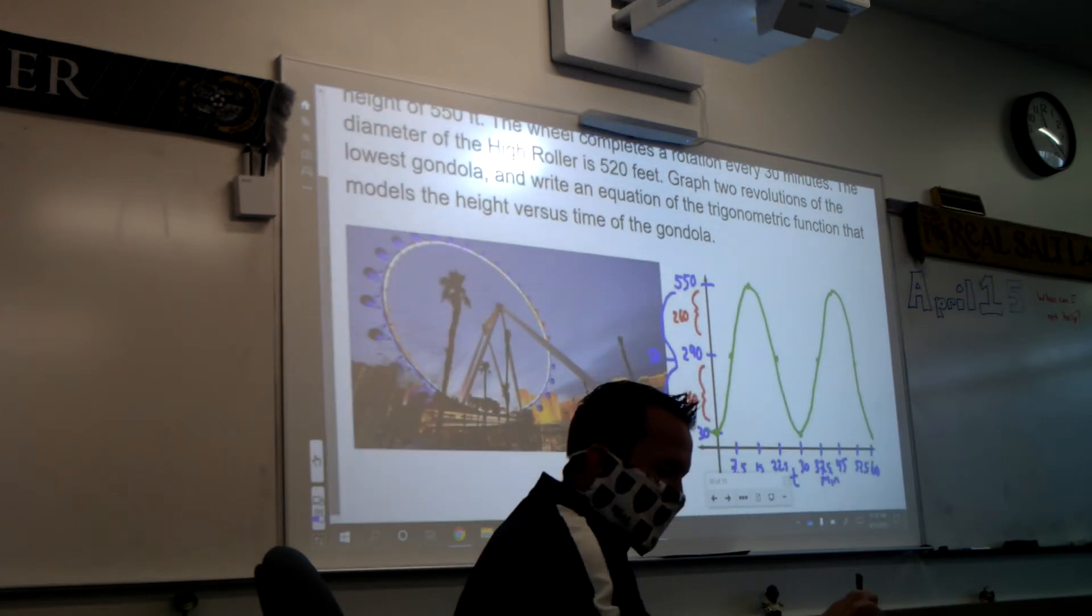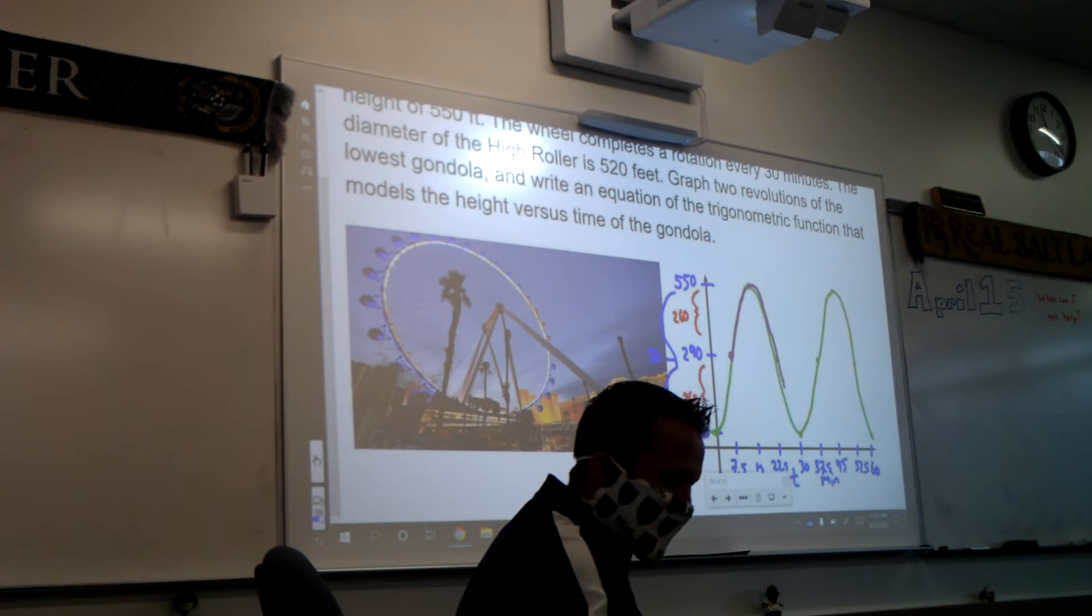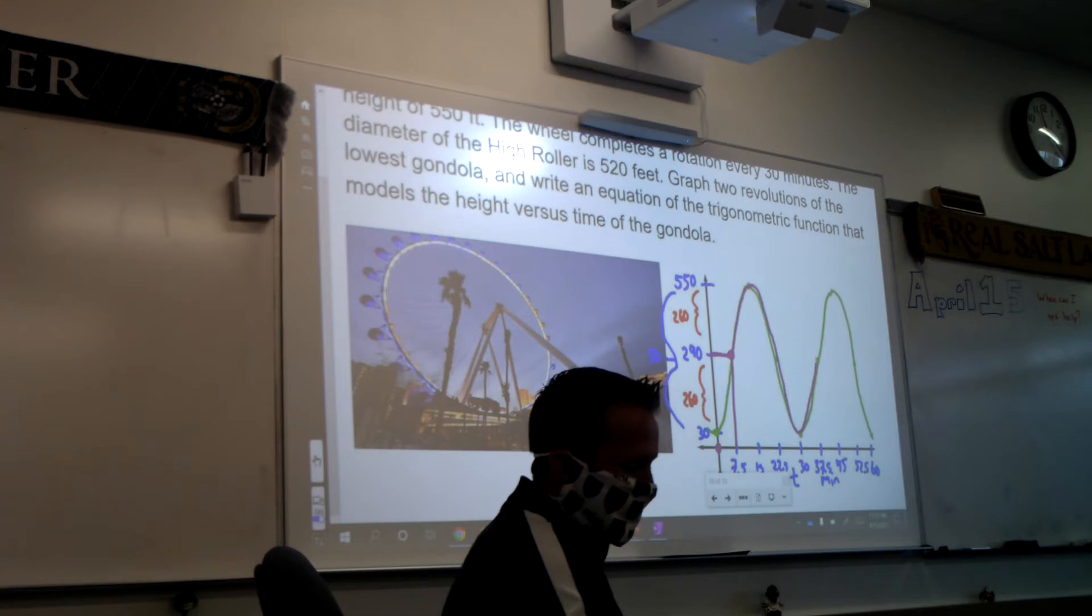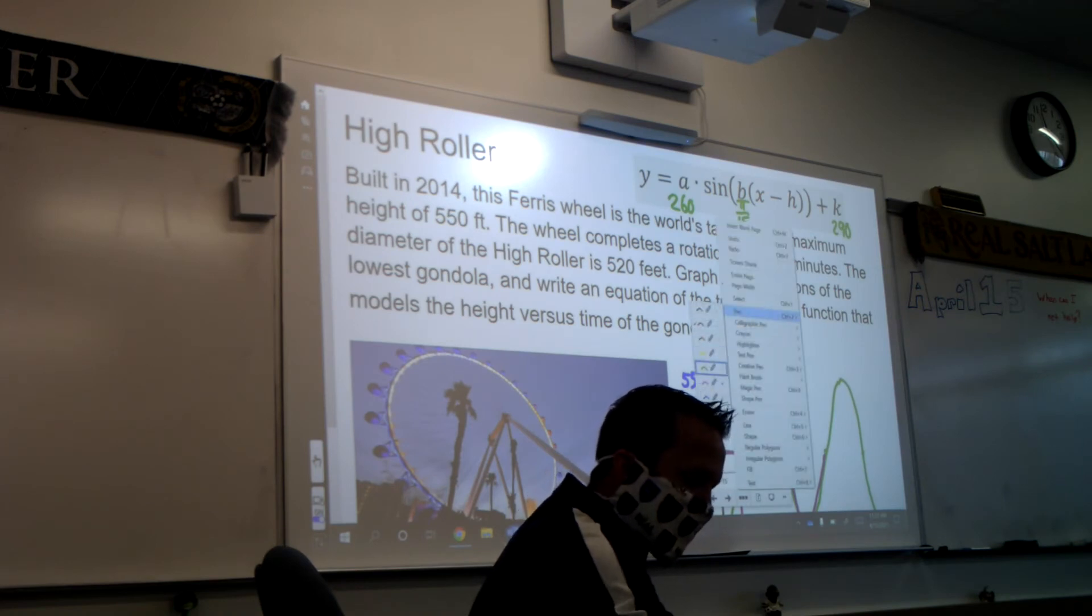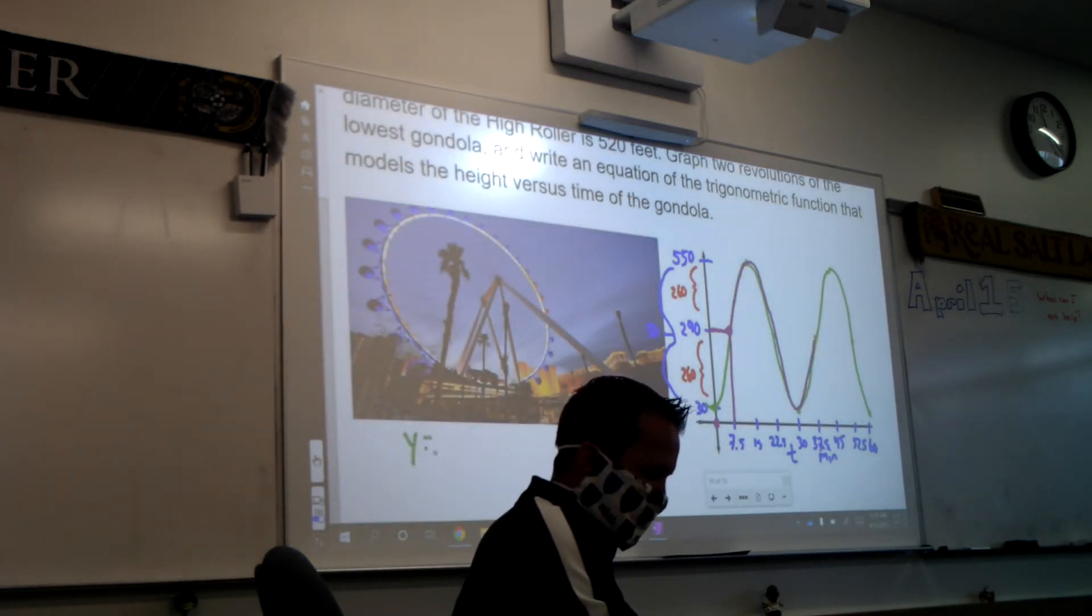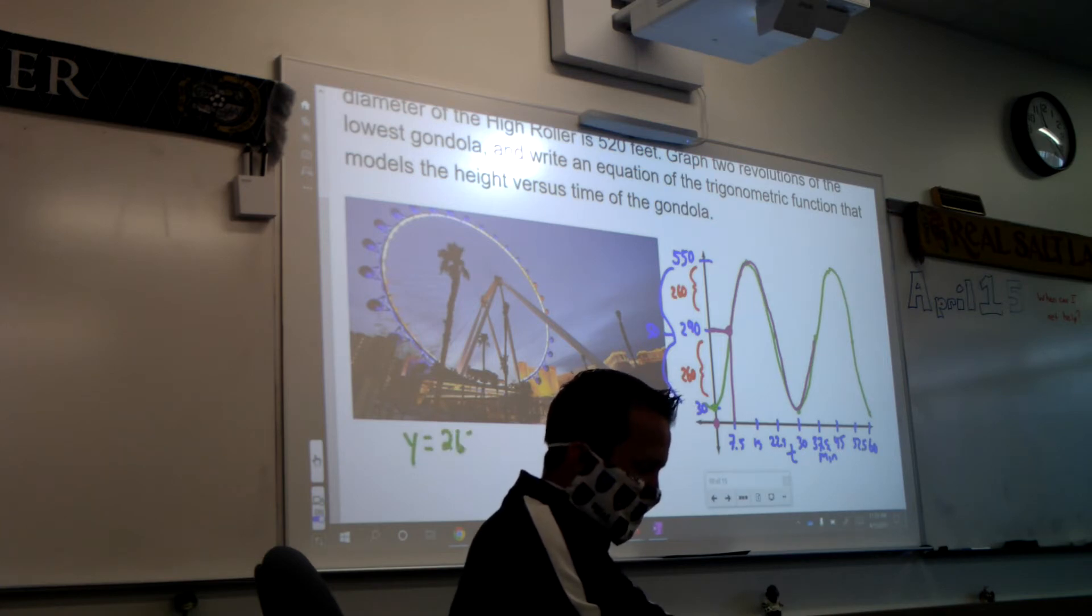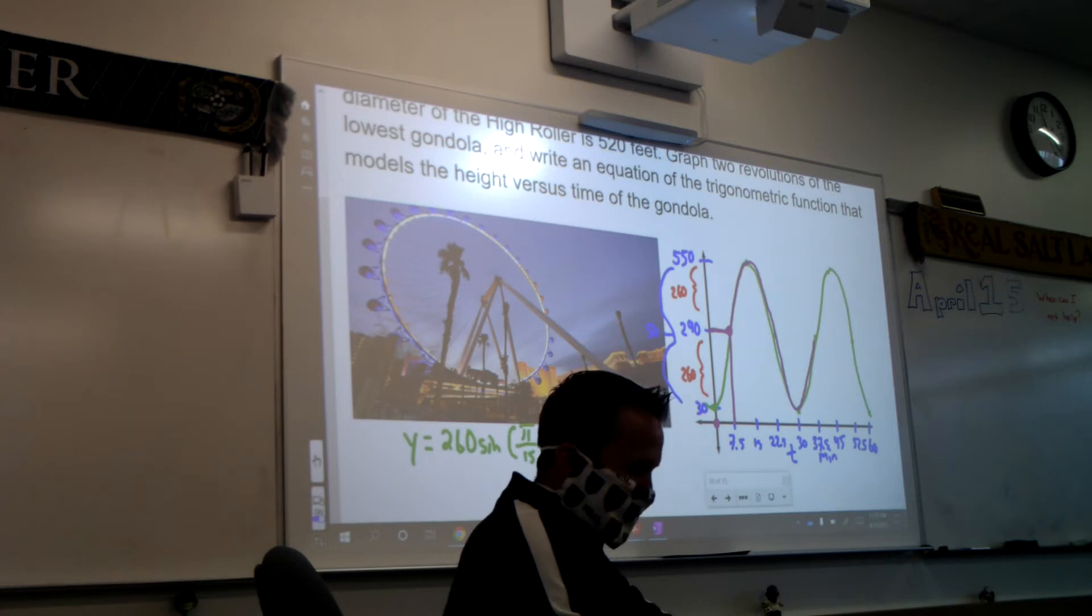And then just like on the last one, if we wanted this to be a sine wave, I'm going to trace it. Sine starts right at its midline, right? Usually, this point right here, it starts at 0, 0. Well, we shifted it up 290. How much did we have to shift it to the right? 7.5. That one is also going to be the same. So, let's write that in there, 7.5. So when I write this equation, it's going to look like this. Y is equal to 260 sine, parenthesis, pi over 15, parenthesis, x minus 7.5, parenthesis, parenthesis, plus 290.